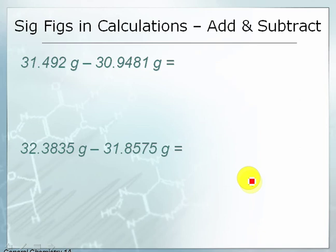Hello. In this video, we're going to go over sig fig rules for addition and subtraction. Recall that the uncertainty in our answer is determined by the largest source of uncertainty in the parameters that go into it. Absolute uncertainty, in the same units as our value, is the uncertainty that matters in addition and subtraction.